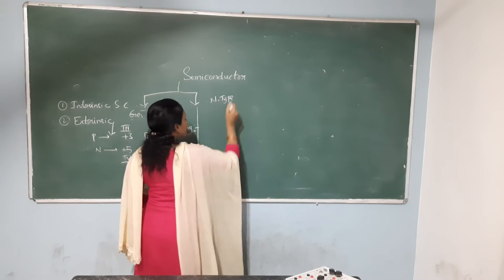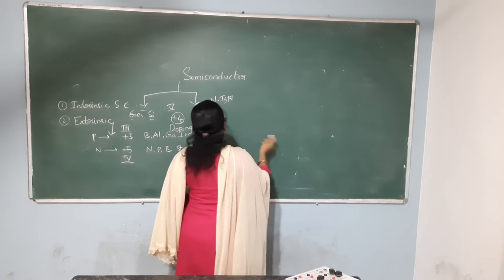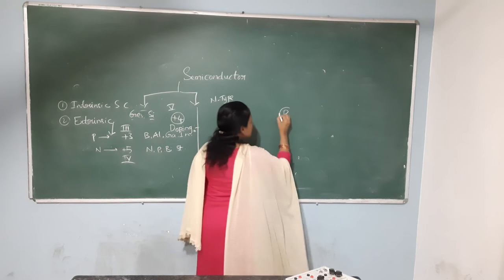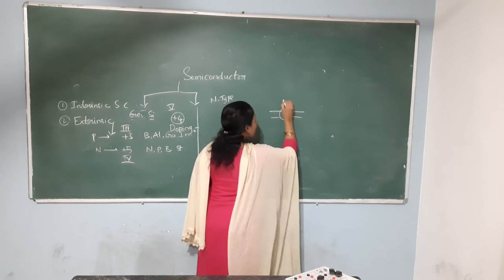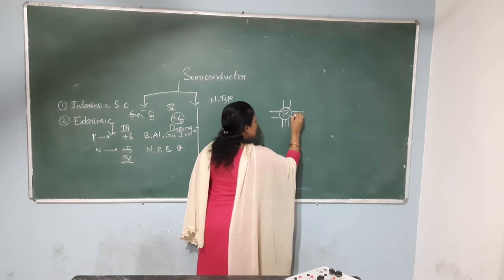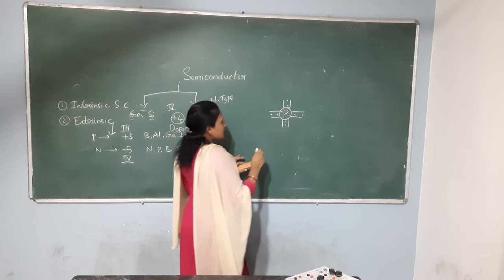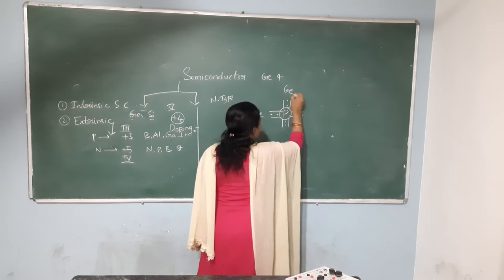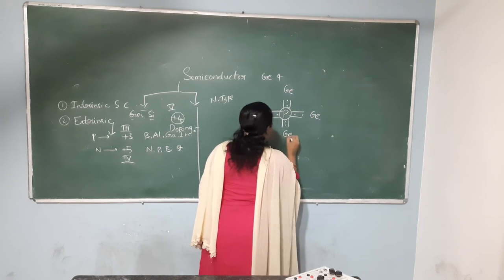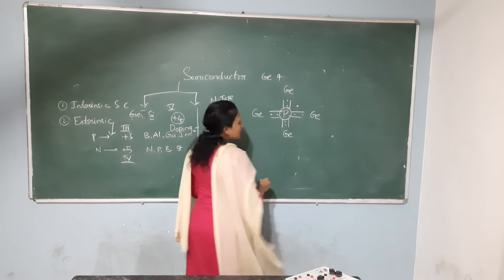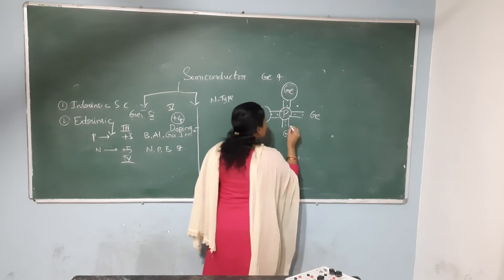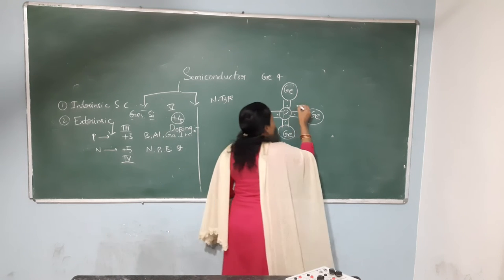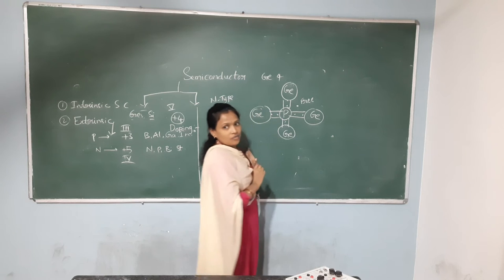Taking the N-type semiconductor. Phosphorus is a pentavalent impurity, so it consists of five free electrons. Germanium has four valence electrons. When phosphorus bonds with germanium, one more electron is free — this is the donor level electron. One extra electron remains free after bonding.